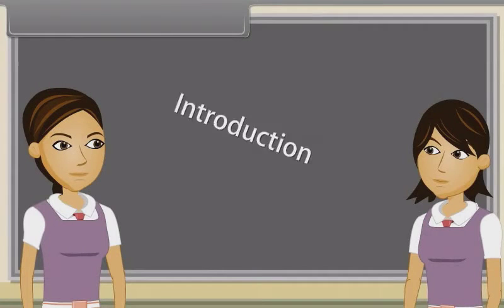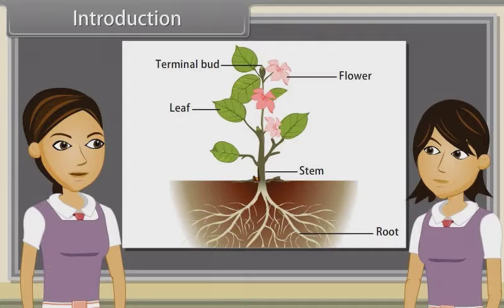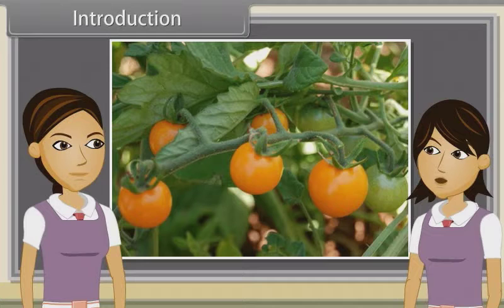We have already discussed characteristics, types, modifications and functions of roots, stems, leaf, inflorescence and flowers. Now we will study sporogenesis, gametogenesis, pollination, fertilization, fruits and seeds.